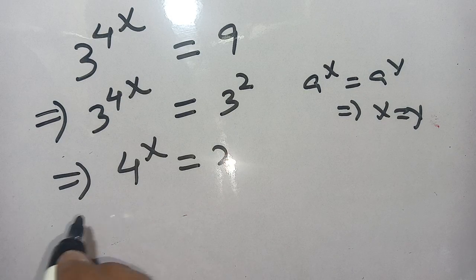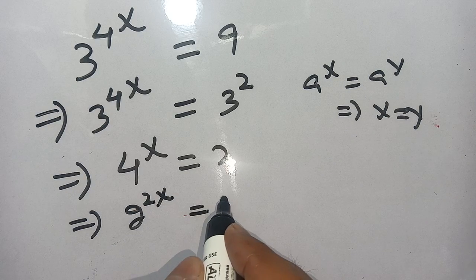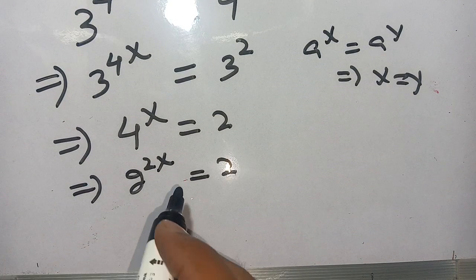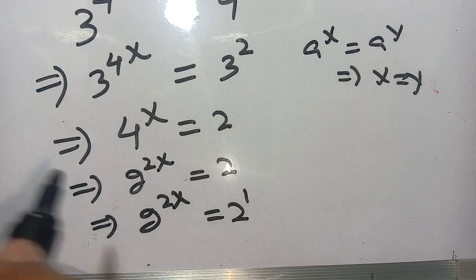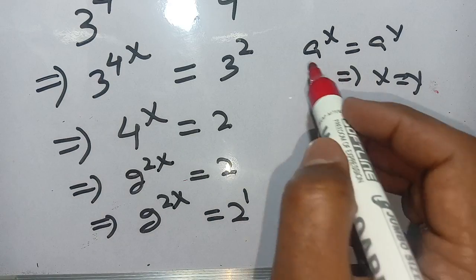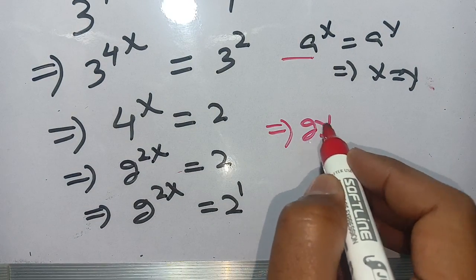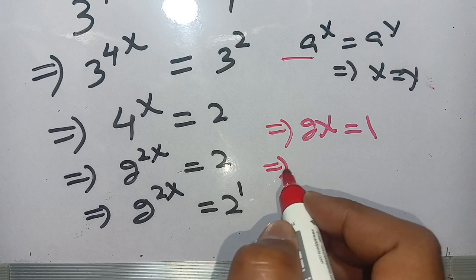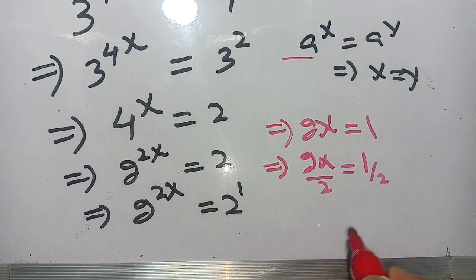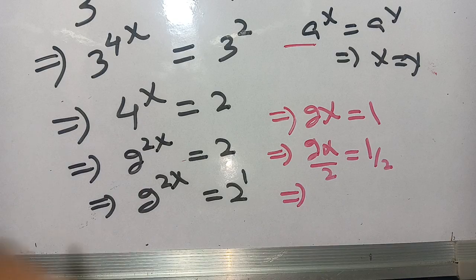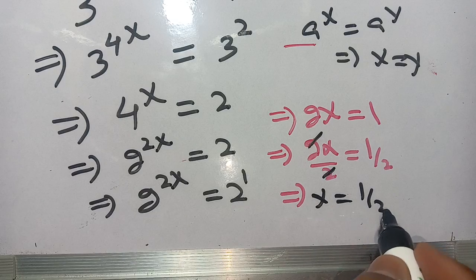Now we break down 4 in terms of 2. We write 4 as 2 raise to power 2, so 2 raise to power 2x is equal to 2 raise to power 1. Using the same identity, we get 2x is equal to 1. Dividing both sides by 2, the 2's cancel out and x is equal to 1 divided by 2.